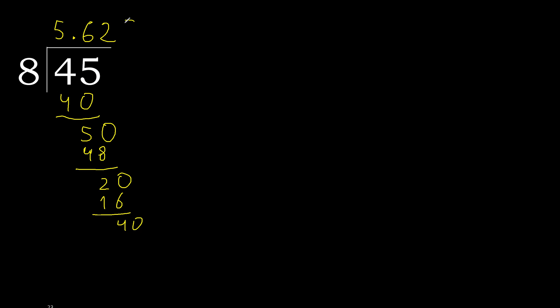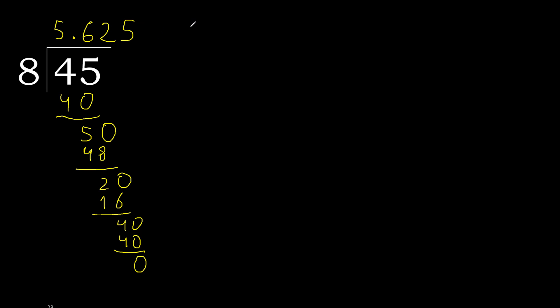8 multiplied by 5 — 40 is not greater. Subtract 0. 0, therefore finished. 45 divided by 8 is here.